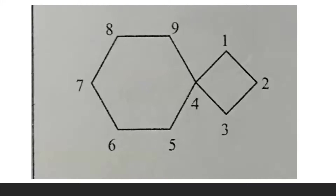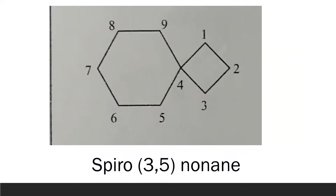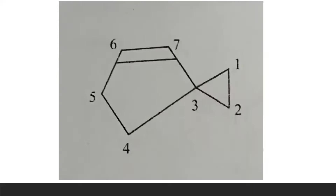For the first spiro example, there is a four-carbon ring and a six-carbon ring attached at a common point. We start naming from the smaller ring so it gets the least locant number and the bigger ring gets the higher locant number. The common spiro carbon is the fourth carbon; there are three carbon atoms in the smaller ring and five in the larger, giving nine carbon atoms total. The name is spiro[3.5]nonane, written in ascending order.